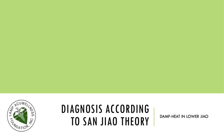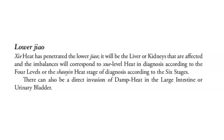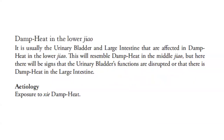Diagnosis according to San Jiao theory — damp heat in the lower jiao. When heat has penetrated the lower jiao, it will be the liver or kidneys that are affected, corresponding to the Ying level heat in a diagnosis according to the four levels, or the Shaoyin heat stage according to the six stages. There can also be a direct invasion of damp heat in the large intestine or urinary bladder. Damp heat in the lower jiao usually affects the urinary bladder and large intestine. This will resemble damp heat in the middle jiao, but here there will be signs that urinary bladder functions are disrupted or that there is damp heat in the large intestine.